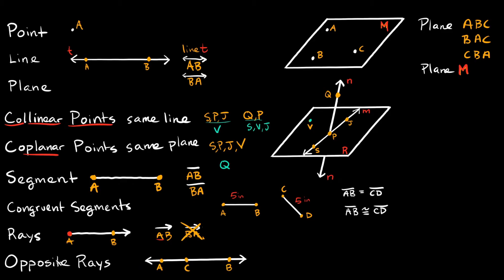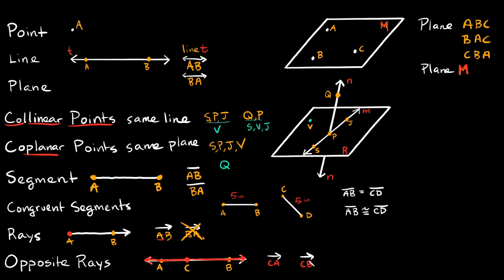Lastly, let's talk about opposite rays. Opposite rays are two rays that start at the same point but go in opposite directions. So you'd basically find this in a straight line. We can split this into two rays that both start at C: ray CA going in one direction, and ray CB going in the other direction. Ray CA and ray CB are opposite rays because they start at the exact same point, C, but head in completely opposite directions.